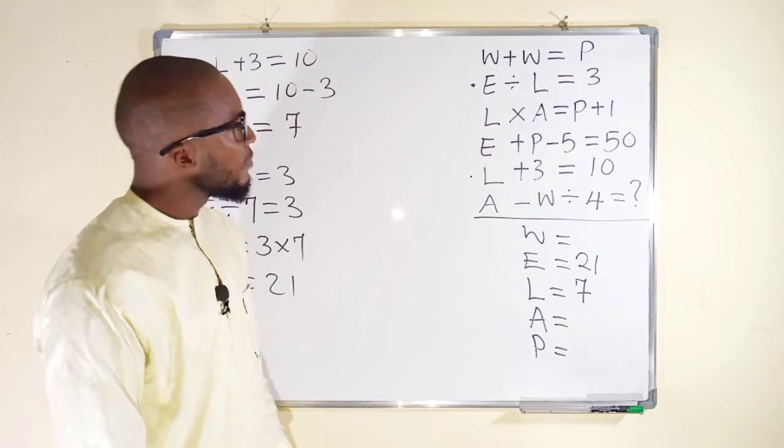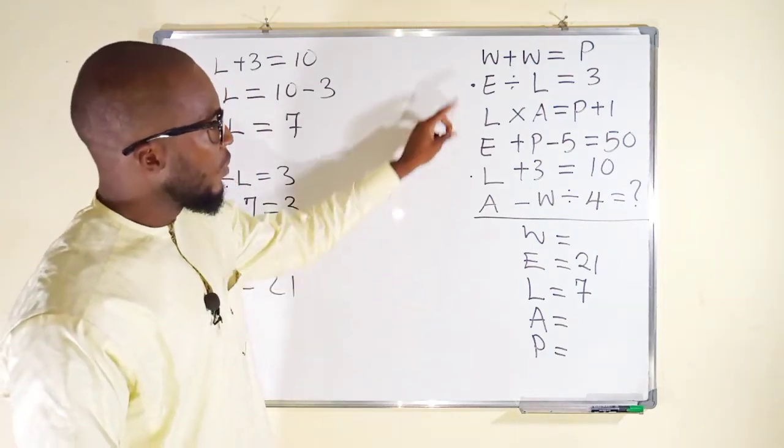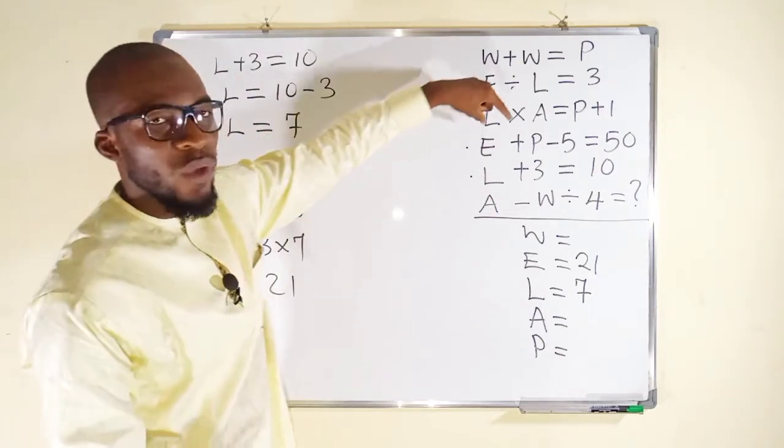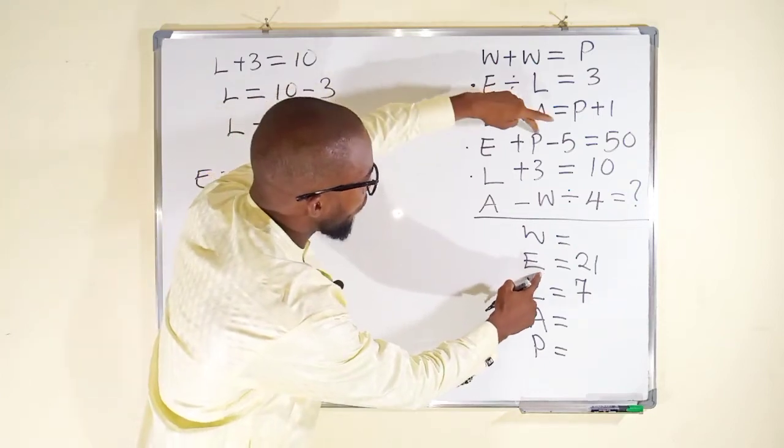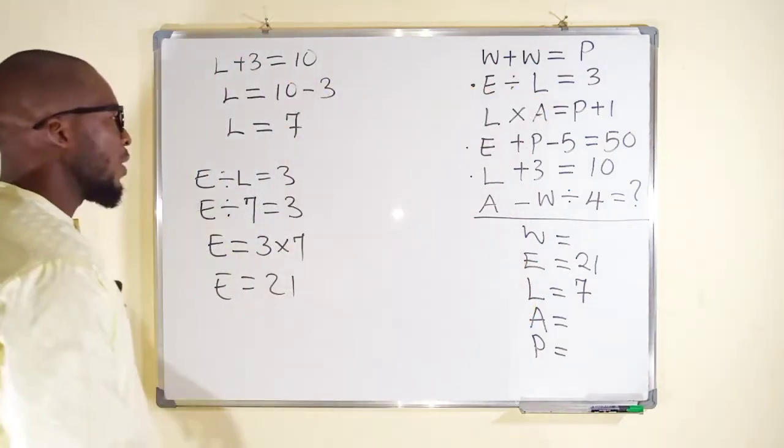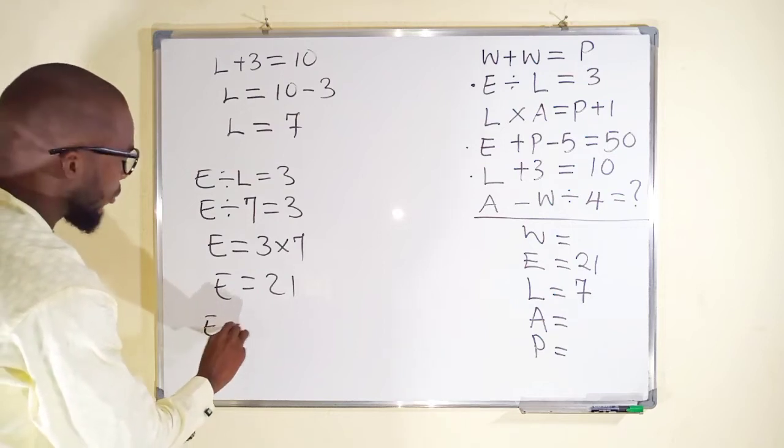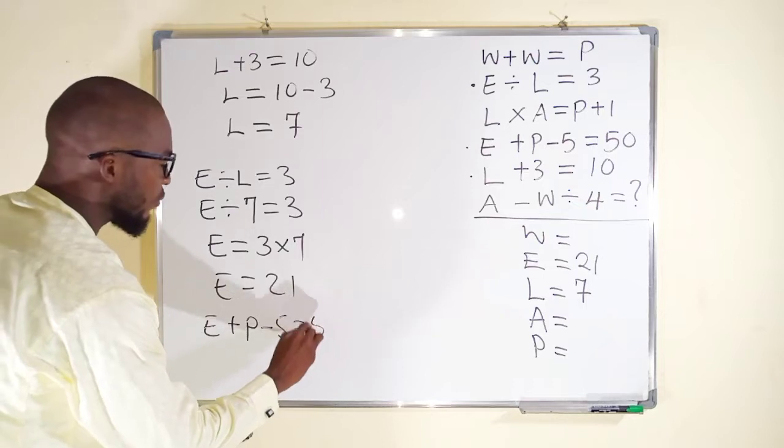Which equation again? We have used this and this. We can use this equation right here because we have two variables, but E is already known. We can use it to find the value of P. So from that equation, you can see that E plus P minus 5 is equal to 50.